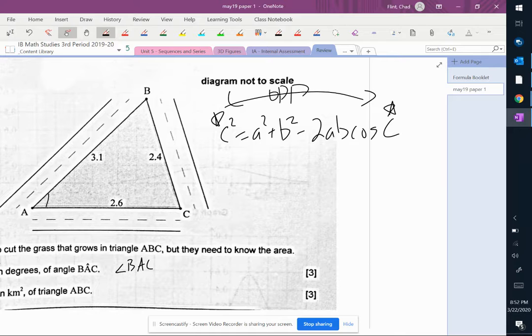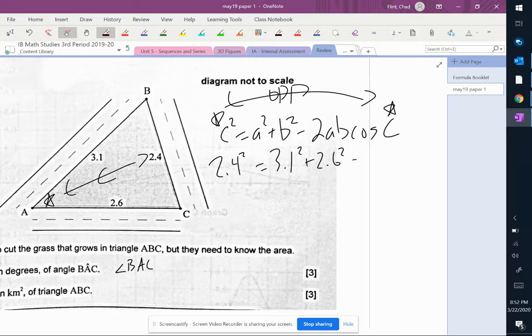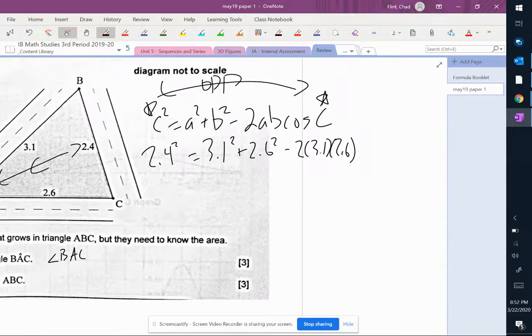So I want to find the angle here. So that means these are going to be C. So I'm going to go 2.4. 2.4 squared equals 3.1 squared plus 2.6 squared minus 2 times 3.1 times 2.6 cosine of C.